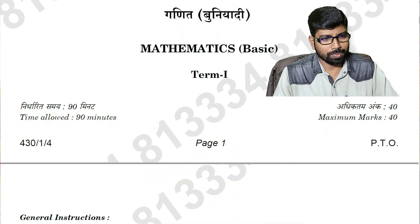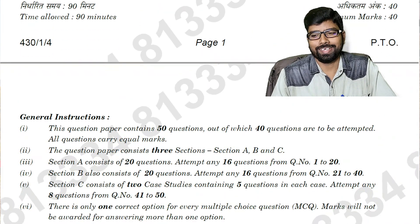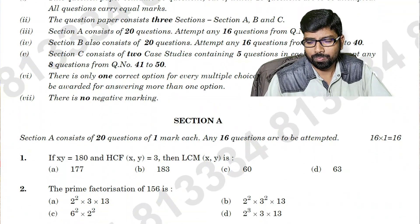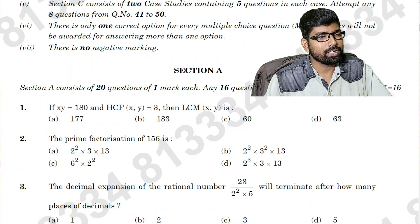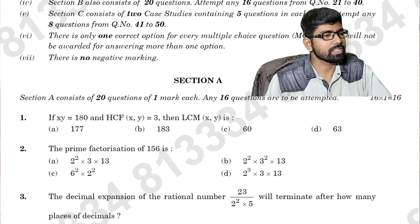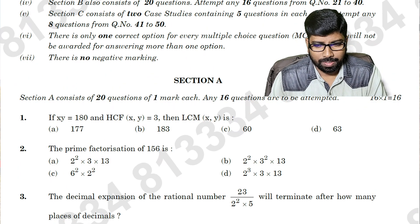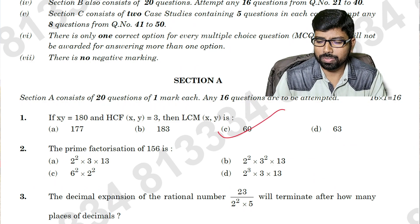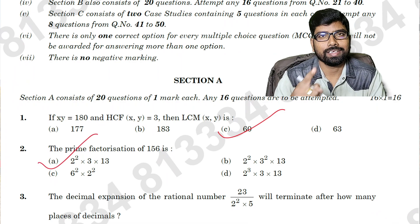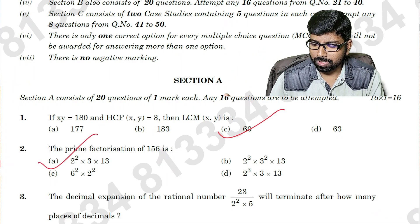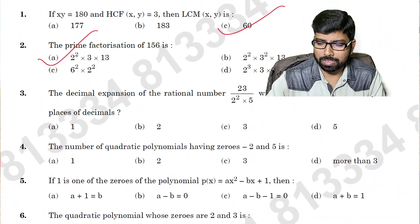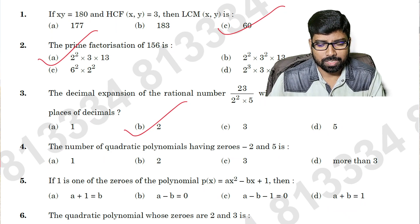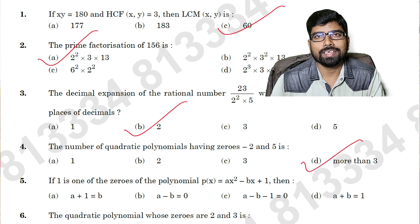Let us see one by one questions. I want to take you to the question — you can see all the instructions. Now here the question paper is on the screen. Question number 1: option C is the right answer. Question number 2: option A is the right answer. Question number 3: option B is the right answer. Question number 4: option D is the right answer.